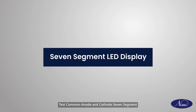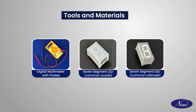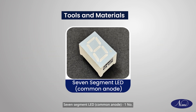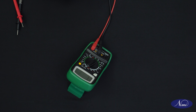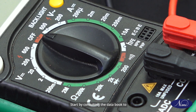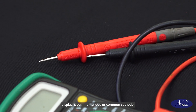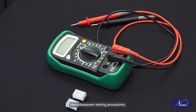Testing common anode and cathode seven segment LED displays. Let us now look at the tools and materials needed. For this procedure, we will need a digital multimeter with probes. The materials we will need are one common anode seven segment LED display and one common cathode seven segment LED display. Step 1: Identify display type using the data book. Start by consulting the data book to determine whether the given seven segment LED display is common anode or common cathode. This crucial step ensures compatibility with the subsequent testing procedures.